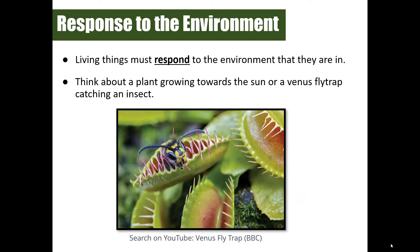All living things must also respond to their environment — this looks different depending on the organism, but it's essential for survival. A great example is the Venus fly trap. Search 'Venus fly trap BBC' on YouTube for a two-minute clip explaining how the Venus fly trap can't get all the nutrients it needs from photosynthesis or soil alone, so it captures flies, uses enzymes to break them down, and absorbs the nutrients — a remarkable example of responding to the environment.